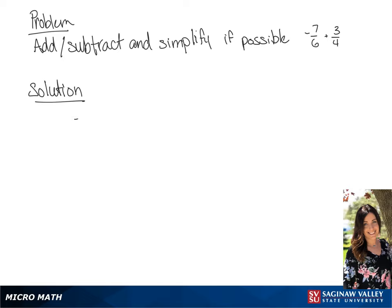We have negative 7 over 6 plus 3 over 4. We want to find a common denominator, which we will find to be 12. So we're going to multiply the first fraction by 2 over 2, and the second fraction by 3 over 3.